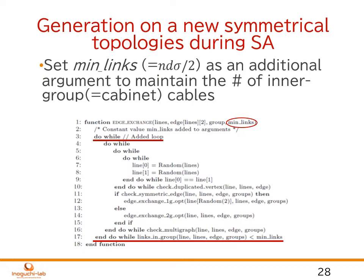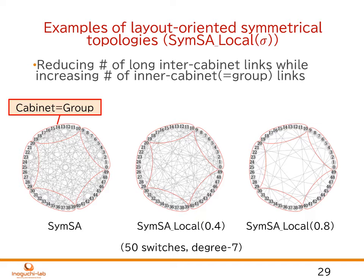These figures show the examples of the original and proposed topologies. We use the notation SimSA Local Sigma to denote the ratio of inner-cabinet cables. As shown here, the increased ratio of inner-cabinet cables can reduce the global inter-cabinet cables.